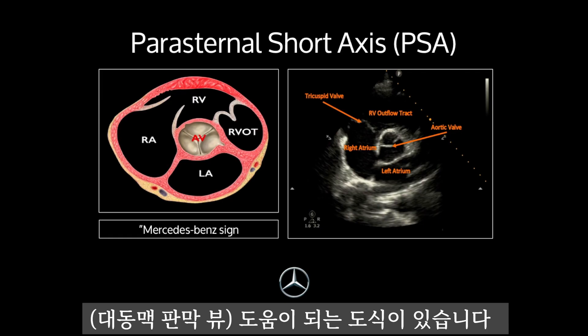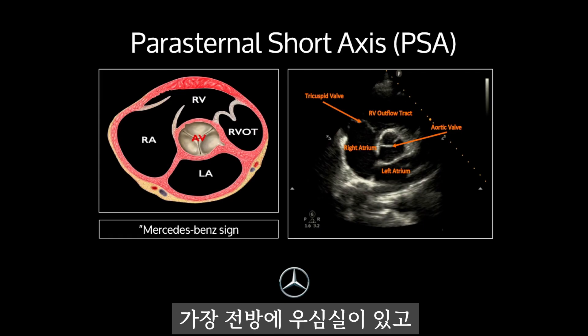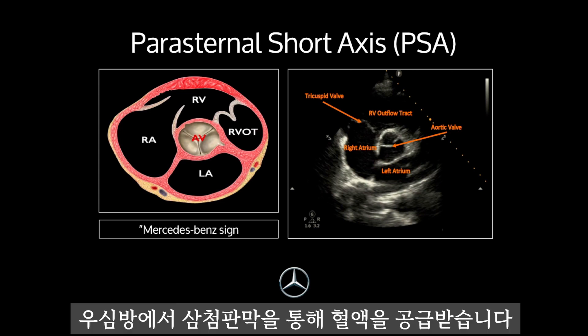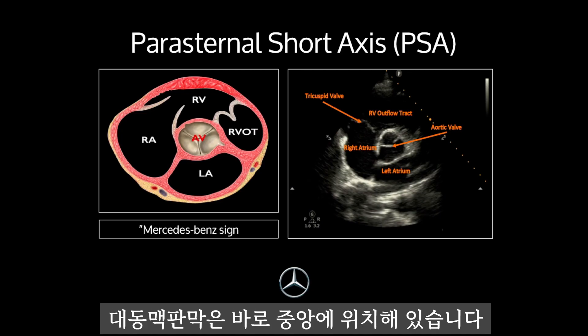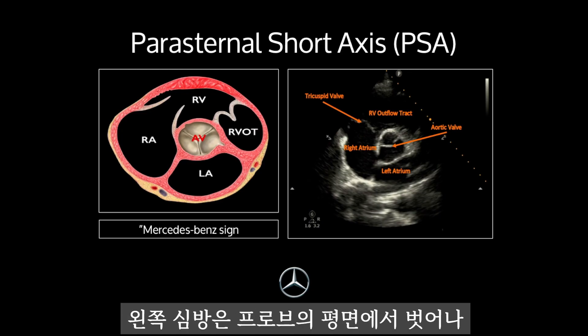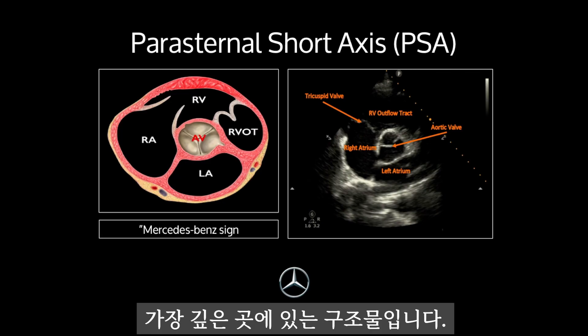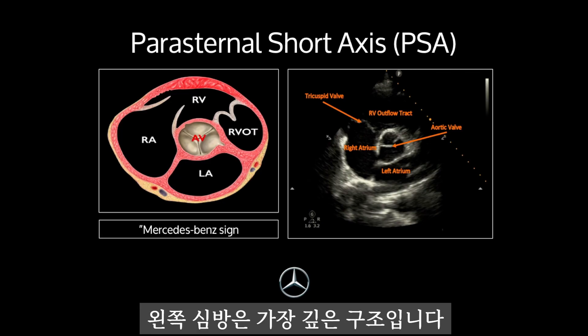Here's a schematic to help identify the images in the parasternal short axis view with the aortic valve in view. Most anteriorly is the right ventricle, with the RA feeding through the tricuspid valve. The tricuspid aortic valve is right in the middle. The left atrium is the deepest structure, feeding down into the screen out of plane of the probe.